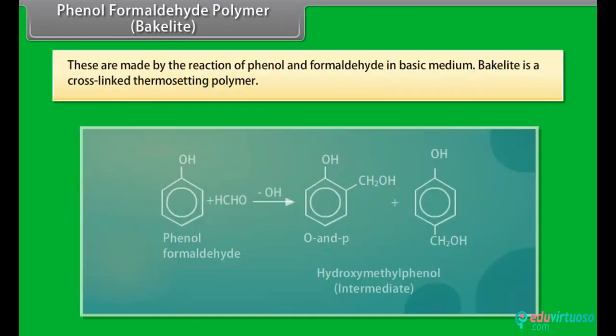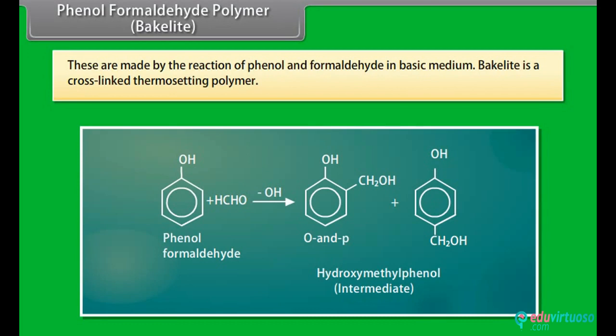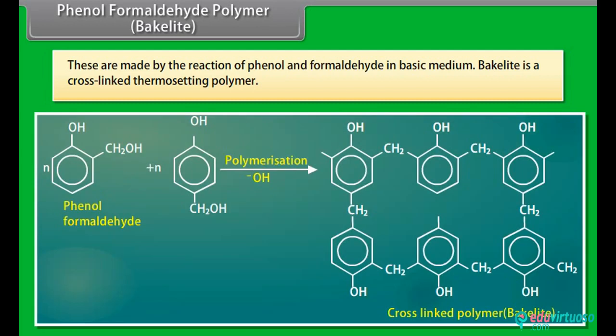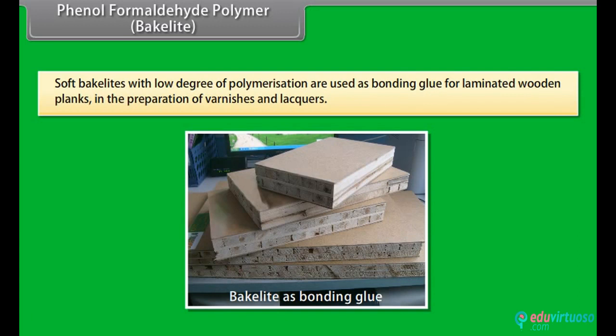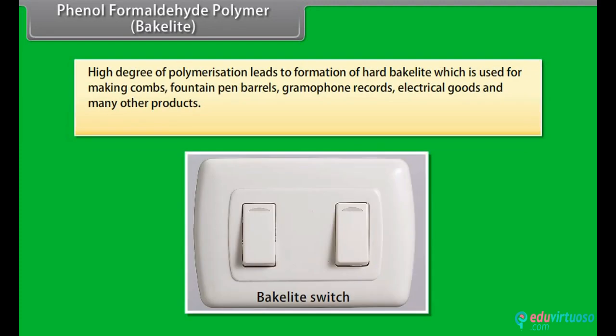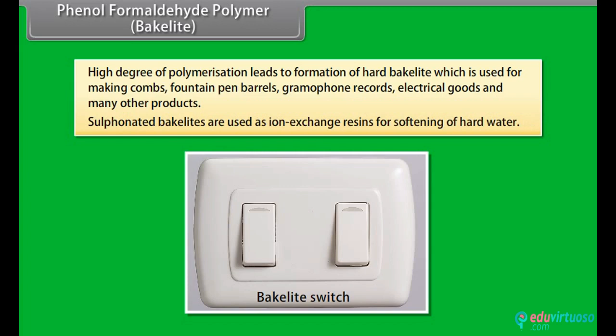Phenol formaldehyde polymer — Bakelite: these are made by the reaction of phenol and formaldehyde in basic medium. Bakelite is a cross-linked thermosetting polymer. Soft bakelites with low degree of polymerization are used as bonding glue for laminated wooden planks in the preparation of varnishes and lacquers. High degree of polymerization leads to formation of hard bakelite which is used for making combs, fountain pen barrels, gramophone records, electrical goods and many other products. Sulfonated bakelites are used as ion exchange resins for softening of hard water.